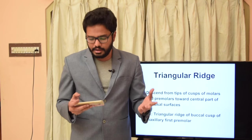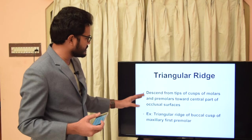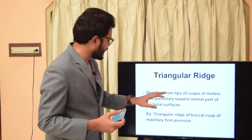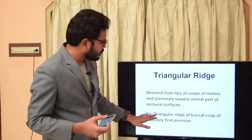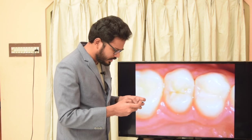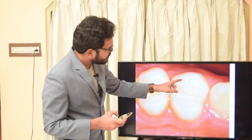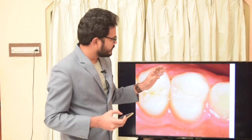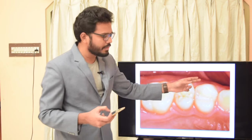The triangular ridge has a triangular shape. These ridges descend from the tips of cusps of molars and premolars towards the central part of the occlusal surface. The best example is the triangular ridge of the buccal cusp of the maxillary first premolar, where from the cusp tip two slopes descend towards the central fossa — these slopes resemble the sides of a triangle.